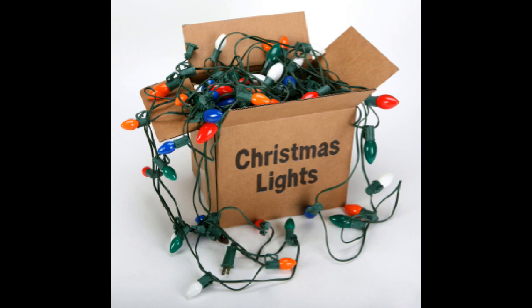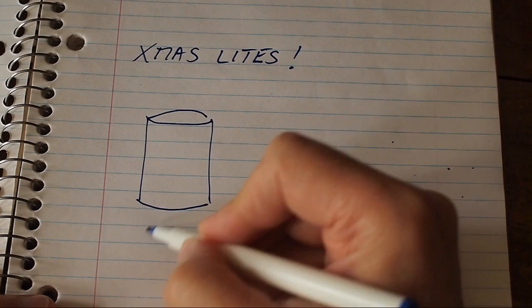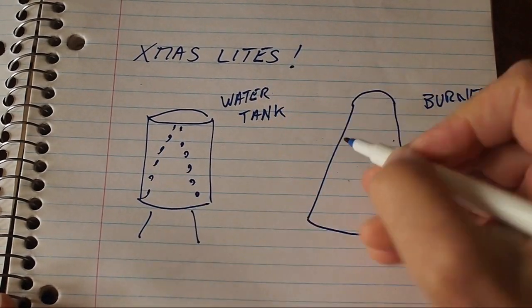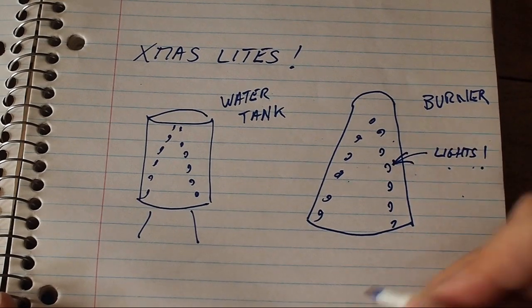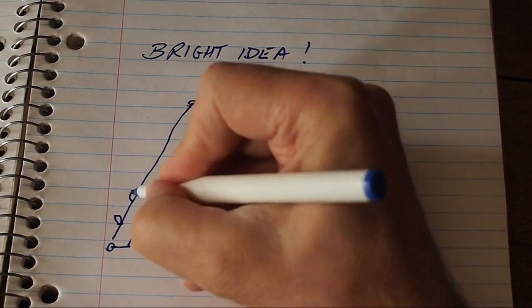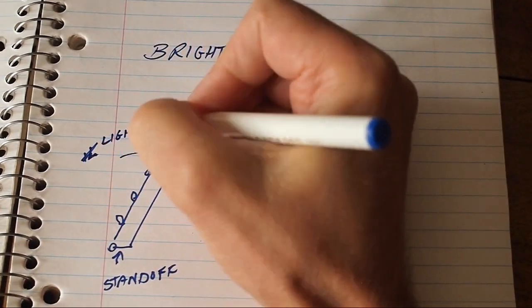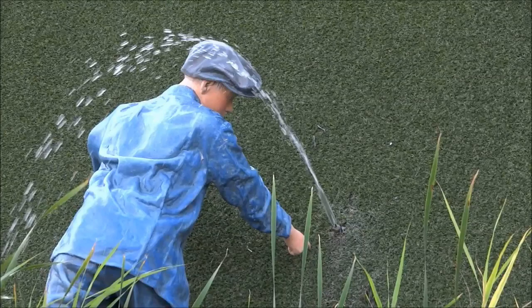The burner already looks sort of like a Christmas tree, so you decide you're going to do the same arrangements of lights on both the burner and the water tank. And you decide you're going to put the strings up with these standoffs that will hold the strings of light a few inches above the surface of the tank and the burner. That way you don't have to keep pounding things into the sides of these important devices, and also it gives you this nice pool of light behind each of the lights.